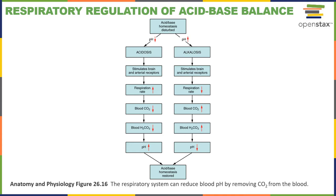The chemoreceptors detect changes in the pH of the brain or arterial blood and regulate the respiratory drive as a short-term mechanism to help maintain pH homeostasis. In response to acidosis detected by the chemoreceptors, there will be an increase in the respiratory drive, stimulating an increase in pulmonary ventilation, which helps to increase the rate of excretion of carbon dioxide from the body, helping to bring back pH homeostasis.